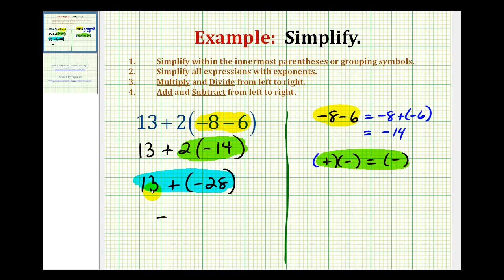Because these integers have different signs, we're supposed to subtract their absolute values, always subtracting the smaller from the larger absolute value. Negative 28 has the larger absolute value, which is why the sum is negative. The absolute value of negative 28 is 28, and the absolute value of 13 is 13, so we subtract.